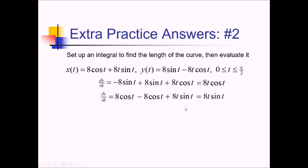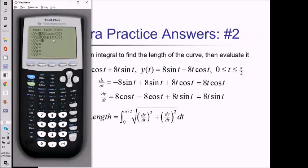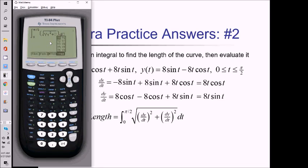Now that I've got those derivatives, all I need to do is take the integral from 0 to pi over 2 of the square root of dx over dt squared plus dy over dt squared, dt. I'm going to use the calculator for this. I'll enter dx over dt and dy over dt as y1 and y2. Then doing math 9 for my integral, from 0 to pi over 2, I do the square root of alpha trace y1 squared plus alpha trace y2 squared. That comes out to about 9.870.